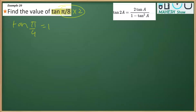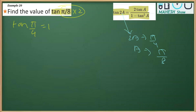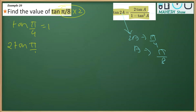We are going to use the identity: tan(2A) = 2·tan(A) / (1 − tan²A). If we consider 2A = π/4, then A = π/8, which is what we want. So we can write tan(π/4) as 2·tan(π/8) / (1 − tan²(π/8)).